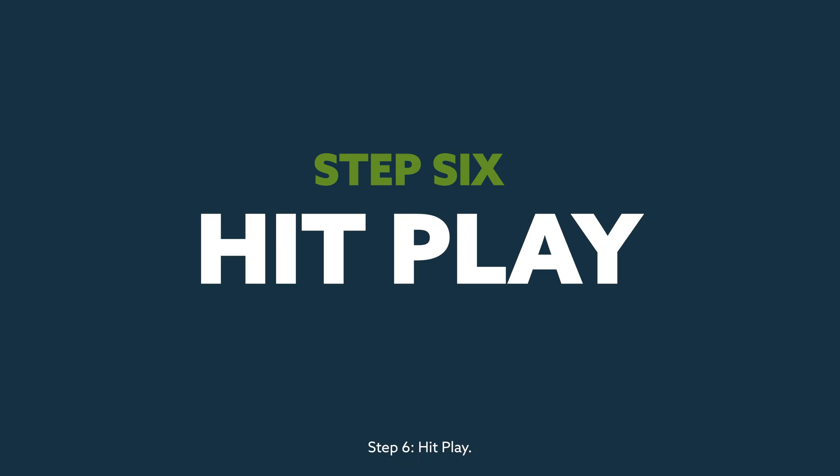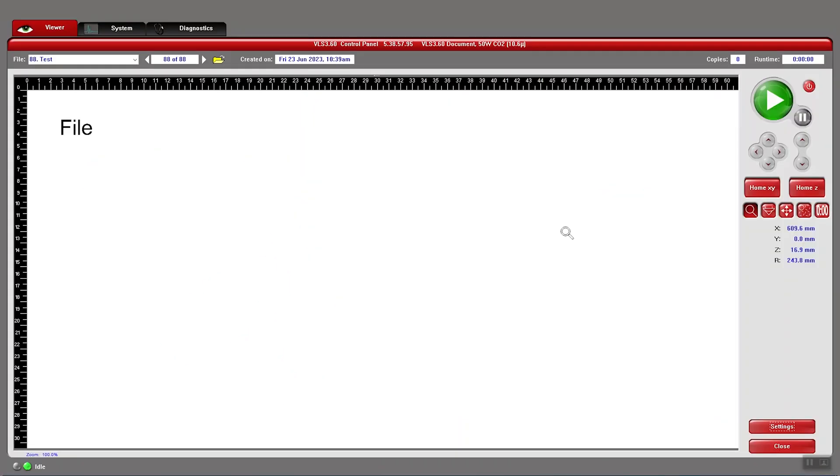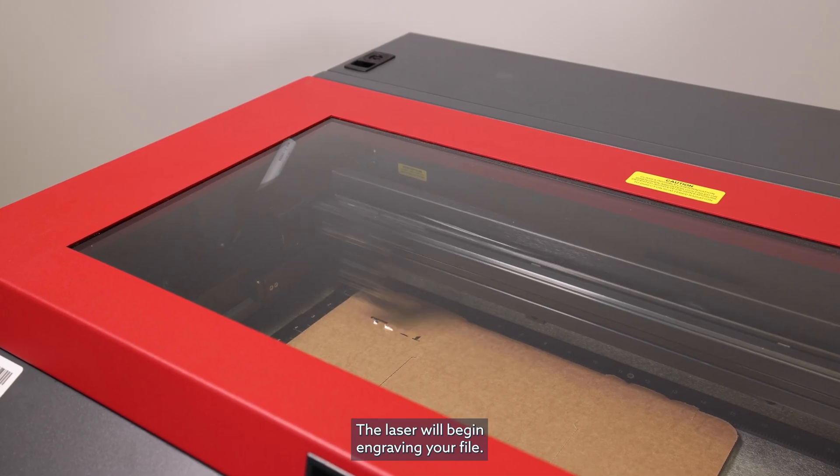Step 6: Hit Play. With everything set up and working properly, it's time to start the project. Press the Play button at the top right corner of the UCP. The laser will begin engraving your file.